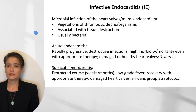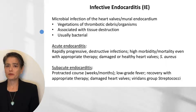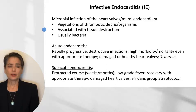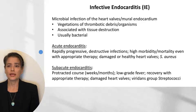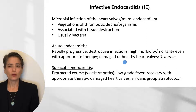Infective endocarditis is caused by microbial infection of the heart valves and/or mural endocardium. We get vegetations of thrombotic debris and organisms that can be very destructive to tissue. Most of the time they're bacterial, but we can also see endocarditis due to fungi or viruses. In acute endocarditis, there are rapidly progressive destructive lesions with high morbidity and mortality even with appropriate therapy, and these can arise on damaged or healthy heart valves. The characteristic organism is Staphylococcus aureus.